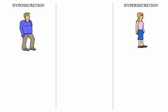One way that scientists learn about the endocrine system is to observe the symptoms of patients who secrete too much or too little of a particular hormone. Diseases associated with the thyroid gland are common. On this page, we will study the effects of hypo- and hypersecretion of thyroid hormone.